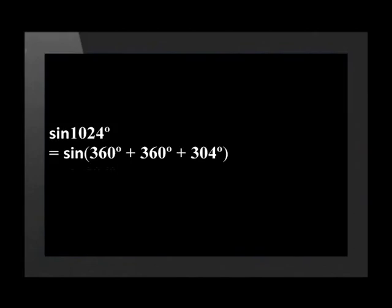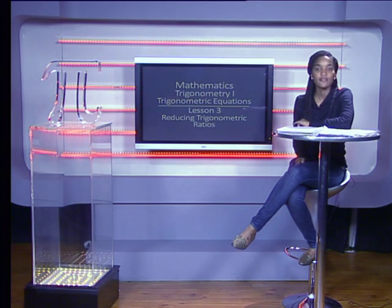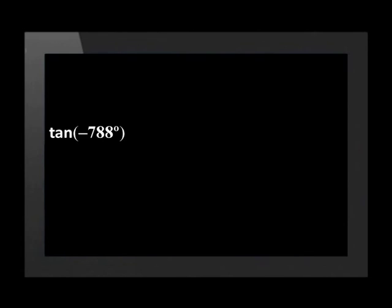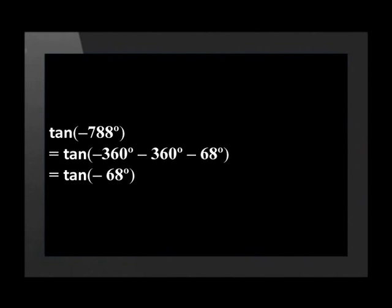Now let's do this in a calculation. We'll reduce sine of 1024 degrees. Sine of 1024 degrees can be written as sine of (360 + 360 + 304) degrees. We can cancel out two full revolutions, so sine of 1024 degrees equals sine of 304 degrees. For a negative angle: tan of negative 788 degrees can be written as tan(−360 − 360 − 68) degrees, which equals tan of negative 68 degrees.